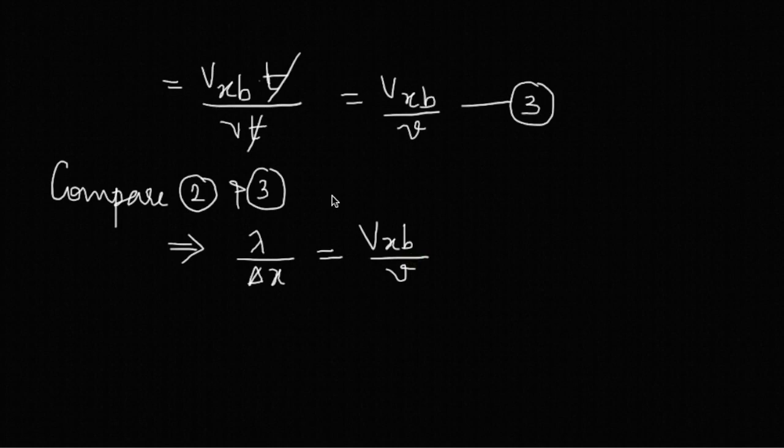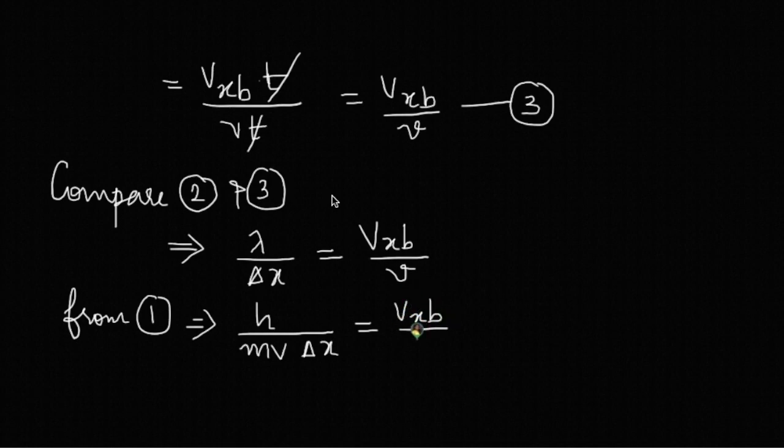Now we may substitute lambda from equation 1. The de Broglie wavelength lambda is given by h by mv, so lambda may be replaced by h by mv. This gives h by mv into delta x equals vxb by v. Cancel out this v and that v.